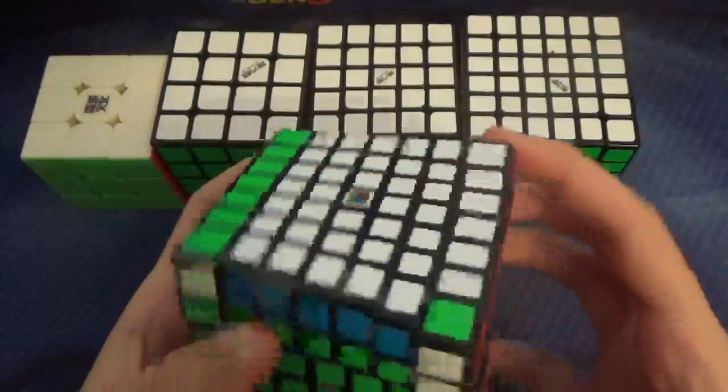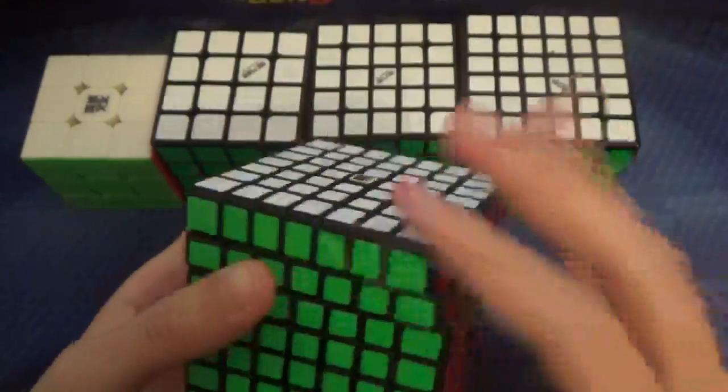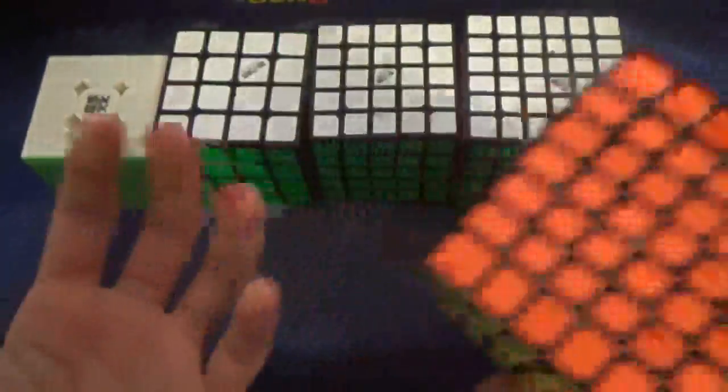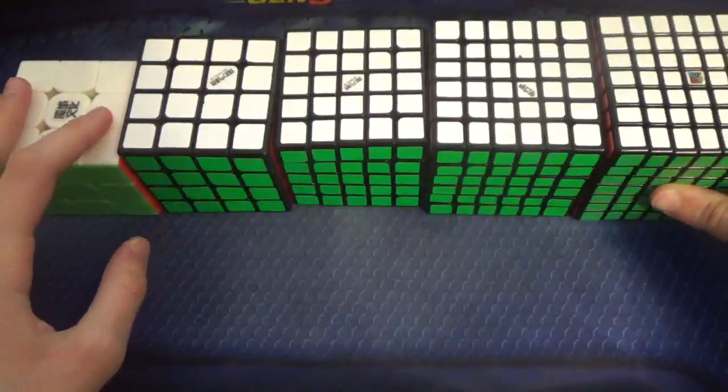My goal is to get a sub-450 average and a sub-440 single. Hopefully I'll get PB single, but my single's pretty good, so I mostly just care about average.